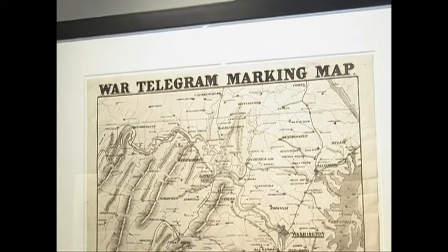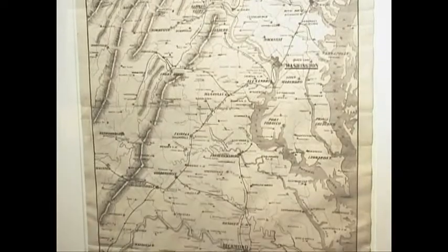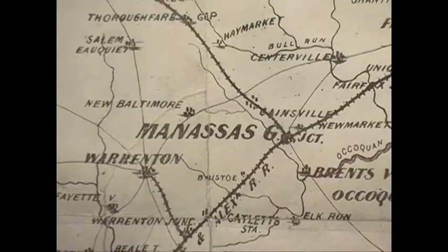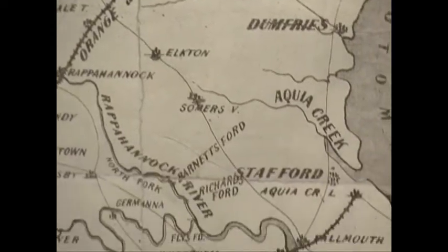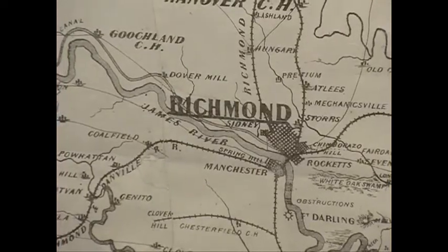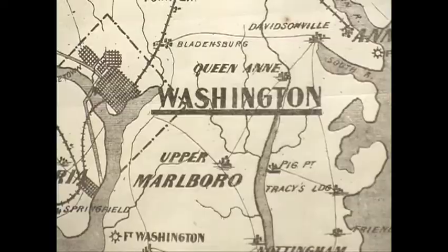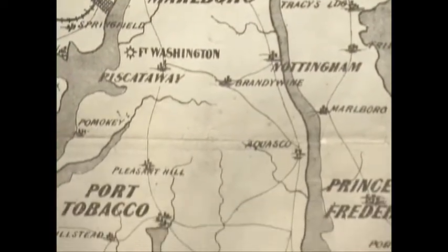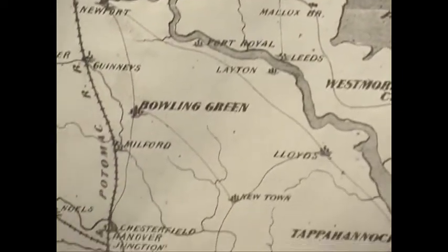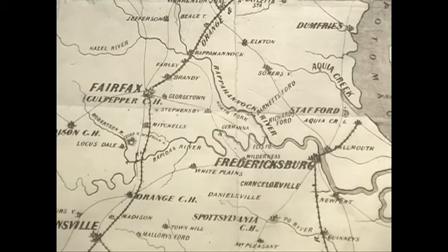Once the war began, people were obviously interested in following the war and its progress. We're standing in front of something called a marking map. This map was published in Boston and prepared for the people at home to follow the war. As they received news by telegram, newspaper, or letter, they could locate on the map where battles were taking place. If they liked, they could use red and blue colored pencils, which came with the map, to mark the route of their relatives as they moved from battle site to battle site. At that time, people were not getting real-time information about wars as we do today, so this was how they kept track of things.